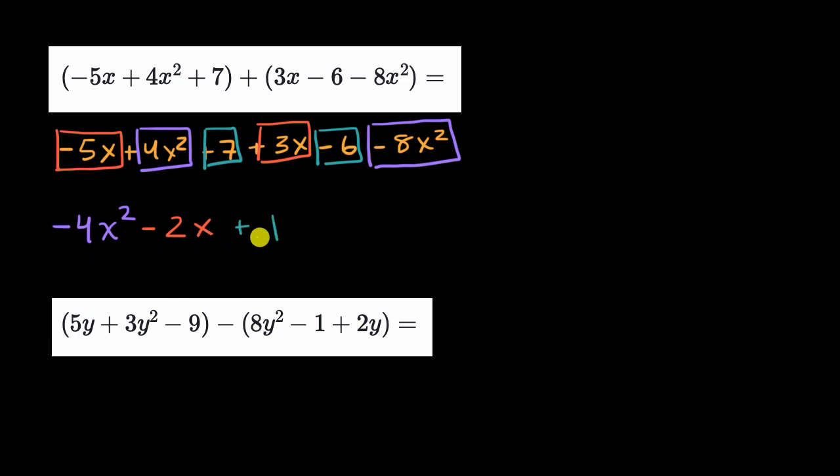And there I have it, I've simplified it. It's a polynomial, and it's in standard form. I've put the highest degree term first, the second degree term, then the first degree term, and then the constant term. Let's do the same thing with this one.